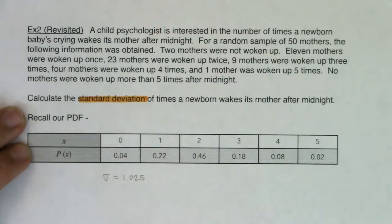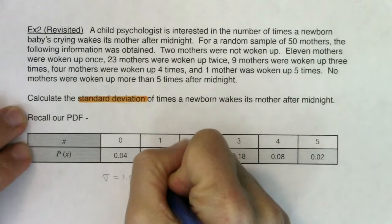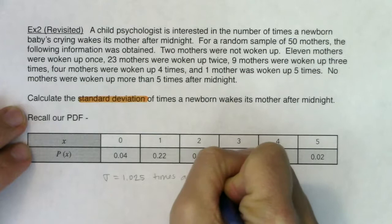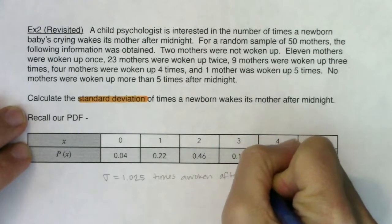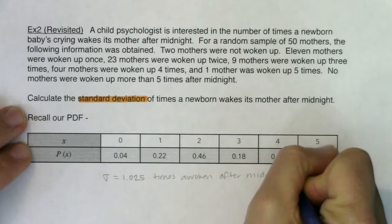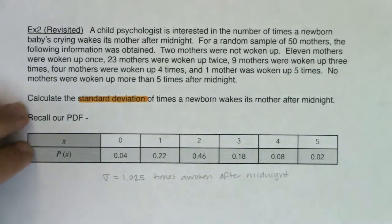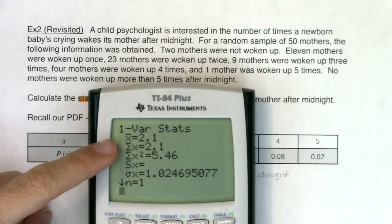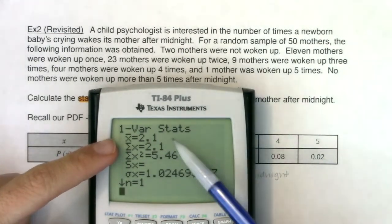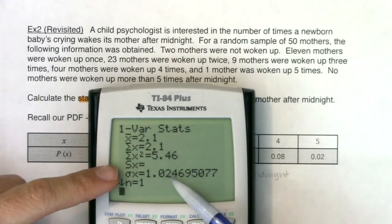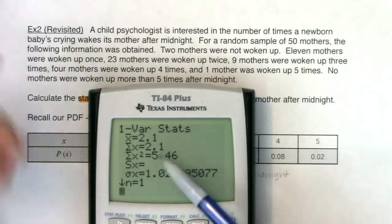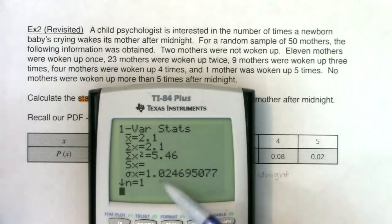Like always, the units of your statistics are the same as your variable, so this is times awoken after midnight. These statistics tell us that on average, moms were getting woken up about 2.1 times per night, and they deviated from that by about 1.025 times. So if you're within one deviation of the mean, you're getting woken up somewhere between 1 and 3 times a night.